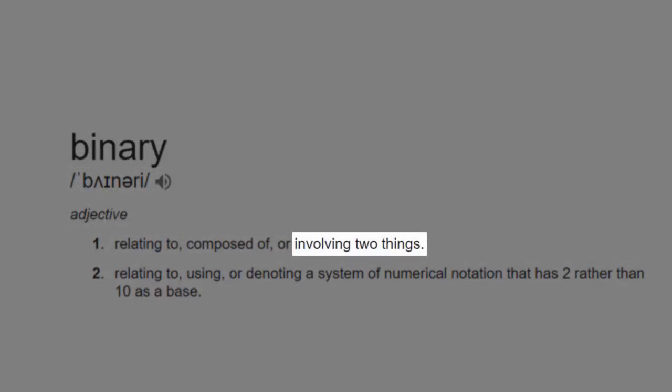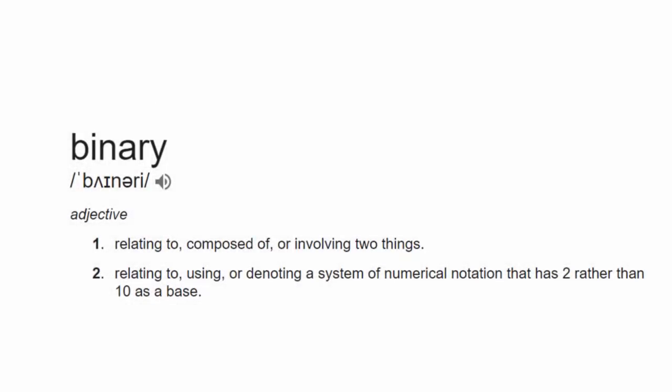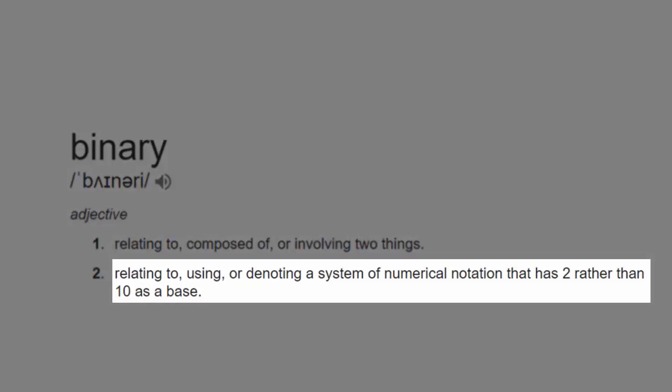In binary we group things in 2s, then 4s, 8s, 16s and so on. It's a factor of 2 each time, instead of 10 in base 10.